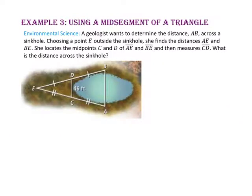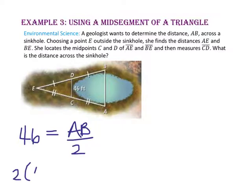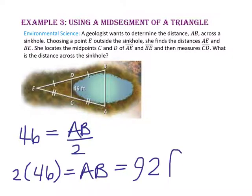In example 3, we will use a mid-segment of a triangle. A geologist wants to determine the distance AB across a sinkhole. Choosing a point E outside the sinkhole, she finds the distances of segment AE and segment BE, then locates midpoints C and D of those segments and measures segment CD. Since the mid-segment is half the length of the side it is parallel to, 46 equals half of side AB. So 2 times 46 equals the length of segment AB, meaning the sinkhole is 92 feet in diameter.